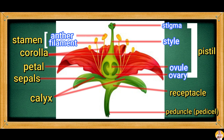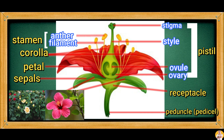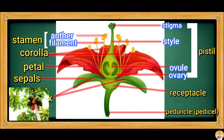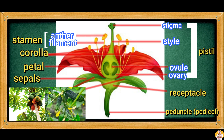If both pistil and stamen are present, the flower is considered complete or bisexual, like rose and gumamela. On the other hand, a flower with either stamen or pistil only is considered incomplete or unisexual. Plants like papaya and cucumber produce only unisexual flowers.